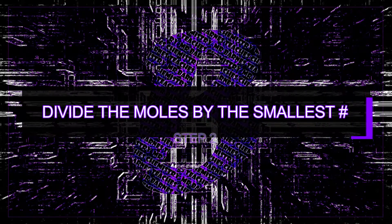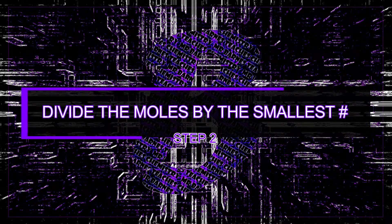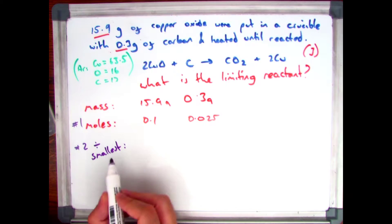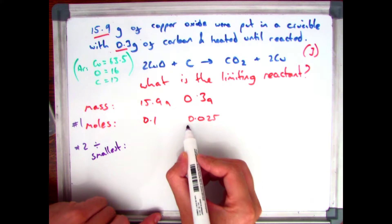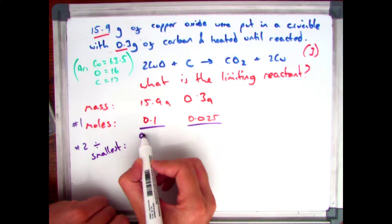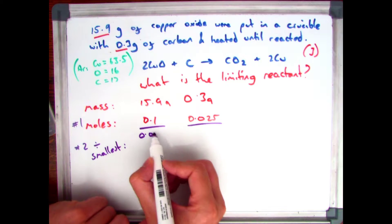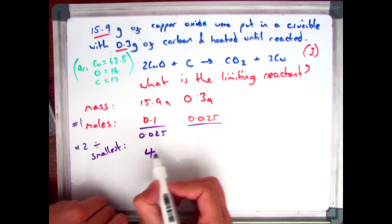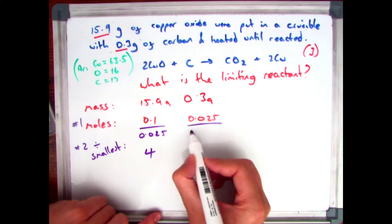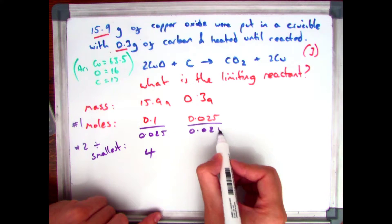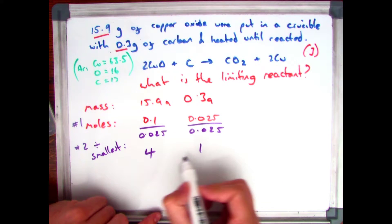My second step is to divide by the smallest, which in this case is 0.025. Dividing them both by 0.025, I get for my copper oxide 4, and for my carbon 1.